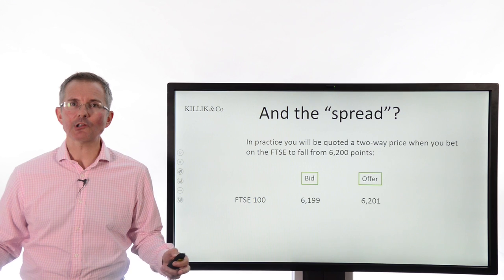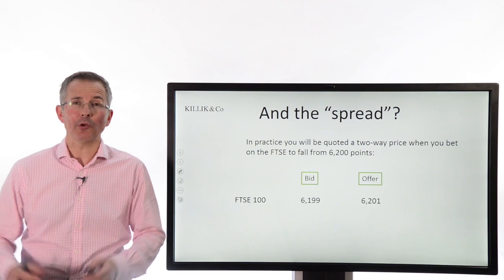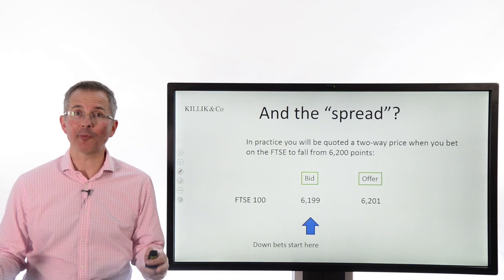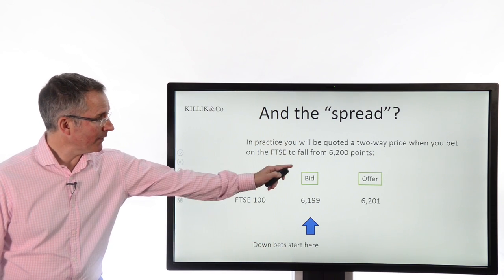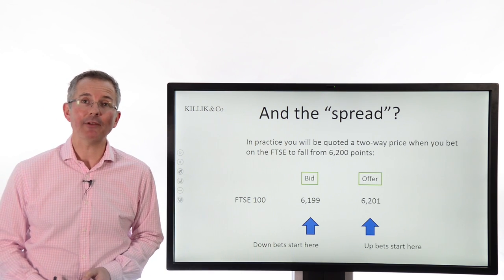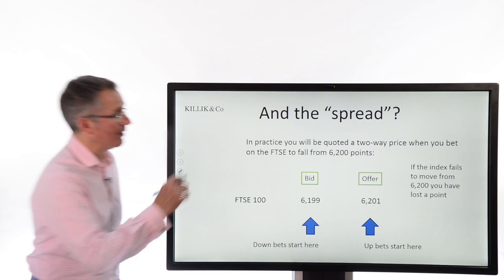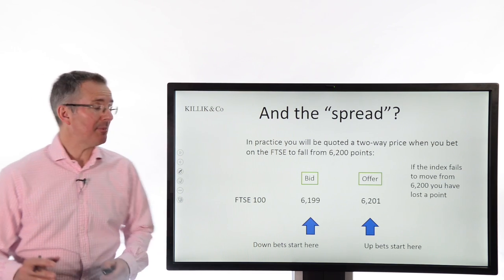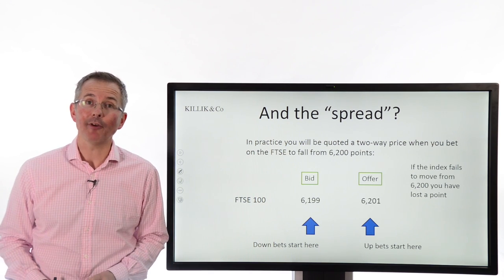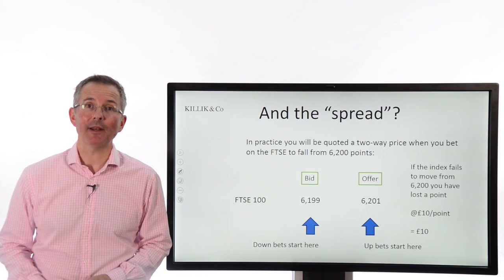Why do they call it spread betting? Usually, there's a two-way price quoted. So if the FTSE is around 6,200 points and you want to bet on whether it will rise or fall, you're quoted two prices — a bid price and an offer price from the spread betting company. Down bets start at one price, and up bets start at the other. The spread locks in a bit of profit for the spread betting company. If the market doesn't move from 6,200 points, people who bet on it rising will effectively lose a tenner, and people who bet on it falling will also lose a tenner — and those tenners go to the spread betting company. That's how they lock in their profit.